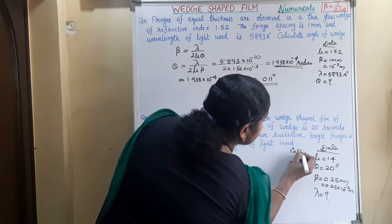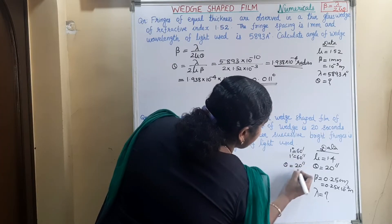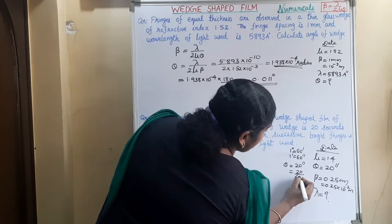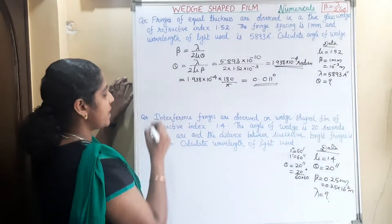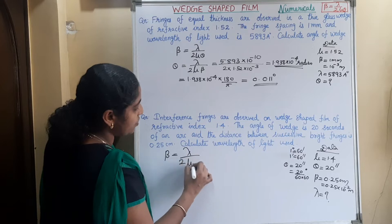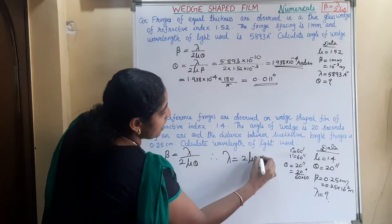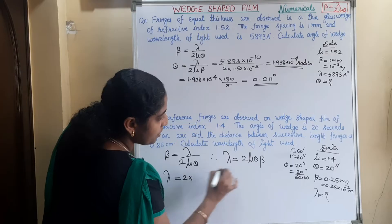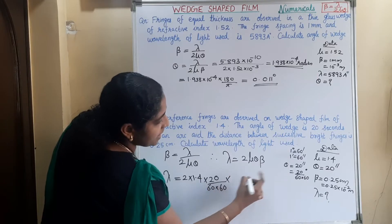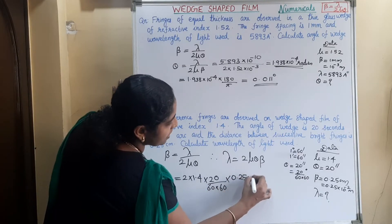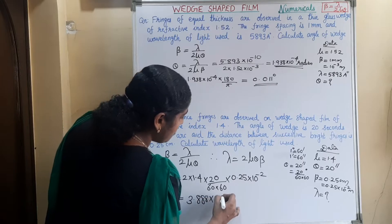1 degree means 60 minutes, and 1 minute means 60 seconds. So theta is equal to 20 seconds, that is 20 by 60 into 60 degree. To find out the wavelength of light used, we use the general formula: beta equal to lambda by 2 mu theta. Therefore lambda is equal to 2 mu theta beta. So lambda is equal to 2 into 1.4 into 20 divided by 60 into 60, into 0.25 into 10 raise to minus 2 meter. On calculating, we will get 3.888 into 10 raise to minus 5 meter.